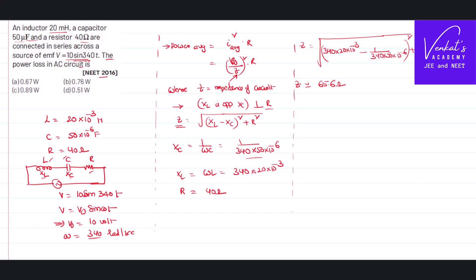Once you know Z, I can substitute here and I will get the power average. Power average is V₀... but what we are supposed to write is the value of V_rms. We know that V_rms = V₀/√2, that is 10/√2.